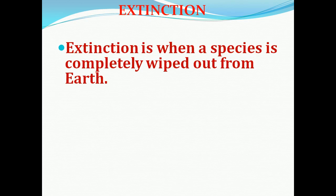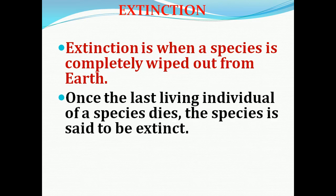What is meant by extinction? Extinction is when a species is completely wiped out from earth. We say an organism is extinct because the particular species is completely removed from the earth. A species is said to be extinct once the last living individual of that particular species dies.